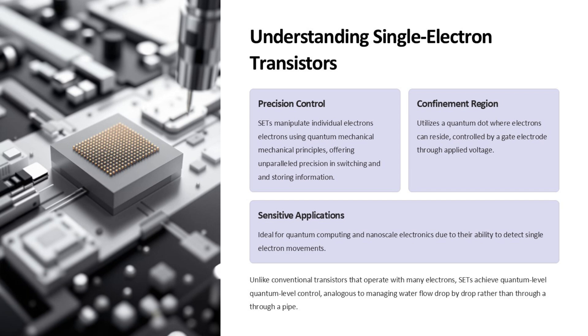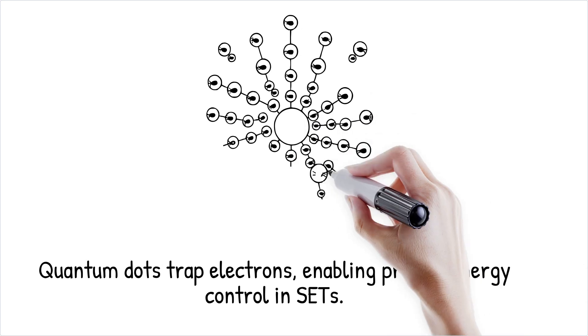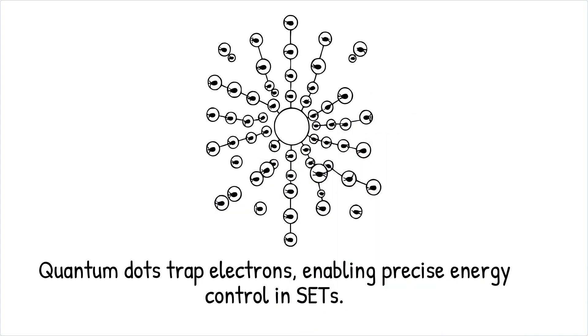The most common structure for SETs involves quantum dots. A quantum dot is a nanoscale region that traps electrons in all three dimensions, creating discrete energy levels akin to those in atoms. This confinement allows for precise control of electron energy states.